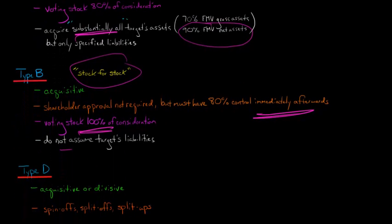A Type D reorganization can be either acquisitive or divisive, and it can be really complicated because you have spinoffs, you have split-offs, you have split-ups. I'll make a separate video on this, but just to give you an idea...